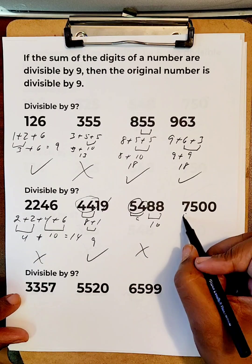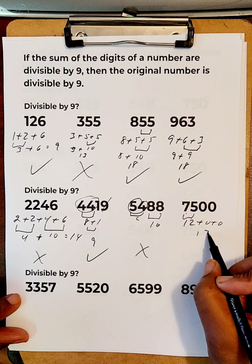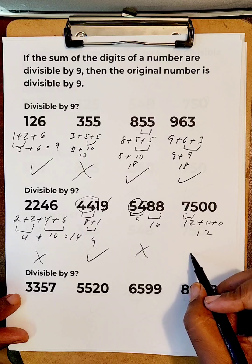7 plus 5 is 12. Plus 0 is 0. Still gives us 12. So, this is not in the 9 timetables.